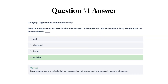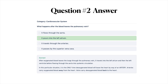Alright, the correct answer for the first question is D, variable. This is correct because body temperature is a variable that can increase in a hot environment or decrease in a cold environment. The correct answer for the next question is B, it pours into the left atrium. After oxygenated blood leaves the lungs through the pulmonary vein, it travels into the left atrium and then the left ventricle before flowing through the aorta into systemic circulation.